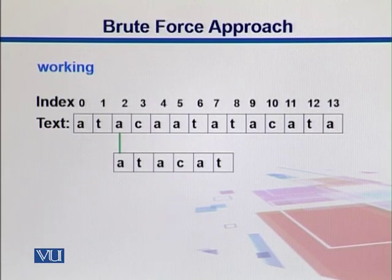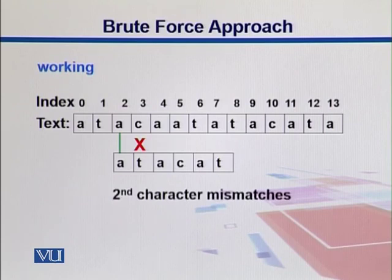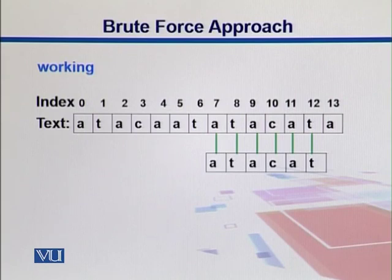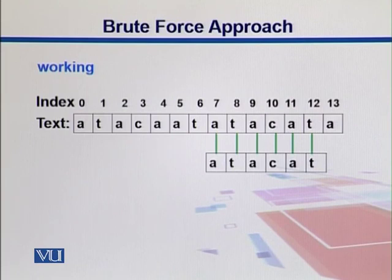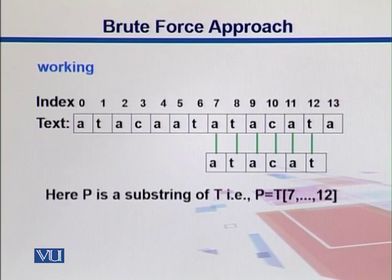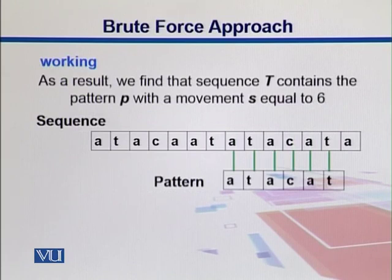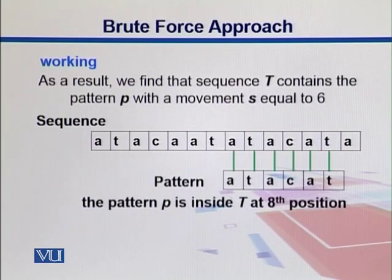Please keep track of the index. Then we see that the second character of the pattern mismatches the fourth character of the text, so we keep moving the pattern one nucleotide ahead. In the end, we find the exact pattern matched at index 7, from position 7 onwards. P is a substring of T present between indices 7 and 12. As a result, we found that the text contains the pattern with 6 moves — S equals 6 — and we conclude that pattern P is inside T at the 8th position.